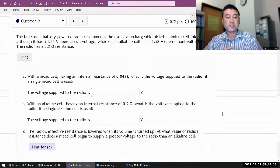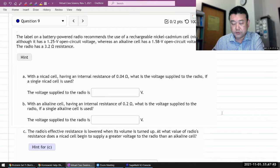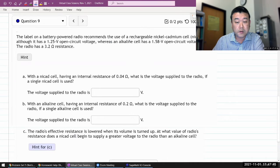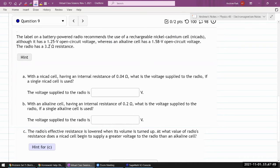So we have question nine. The label on a battery powered radio recommends use of a rechargeable NiCAD, although it has 1.25 volt open circuit voltage. Let me start drawing a diagram of these batteries. So let me draw a battery for the NiCAD battery, when it talks about open circuit voltage.